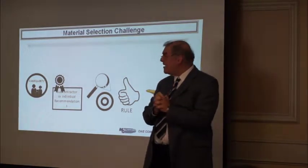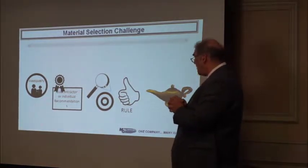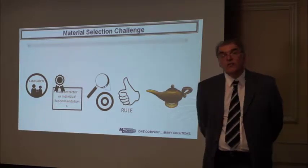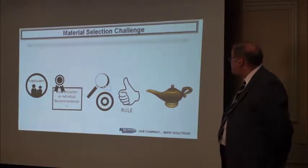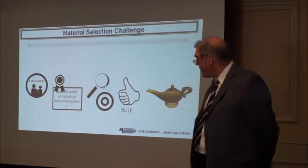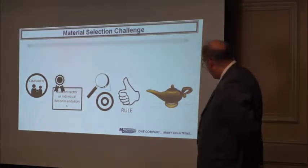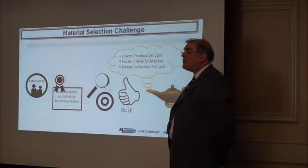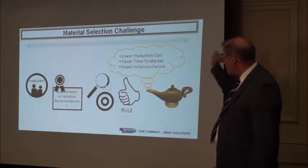When we get a call about a material, the customer will come with some preconceptions. They'll take something they're familiar with, or go according to recommendations from a subcontractor or an engineer they know. Very often they'll select material based on a specific property they're trying to look at. The common goals are lower production cost, faster time to market, and fewer in-service failures — and that's what we want to achieve.